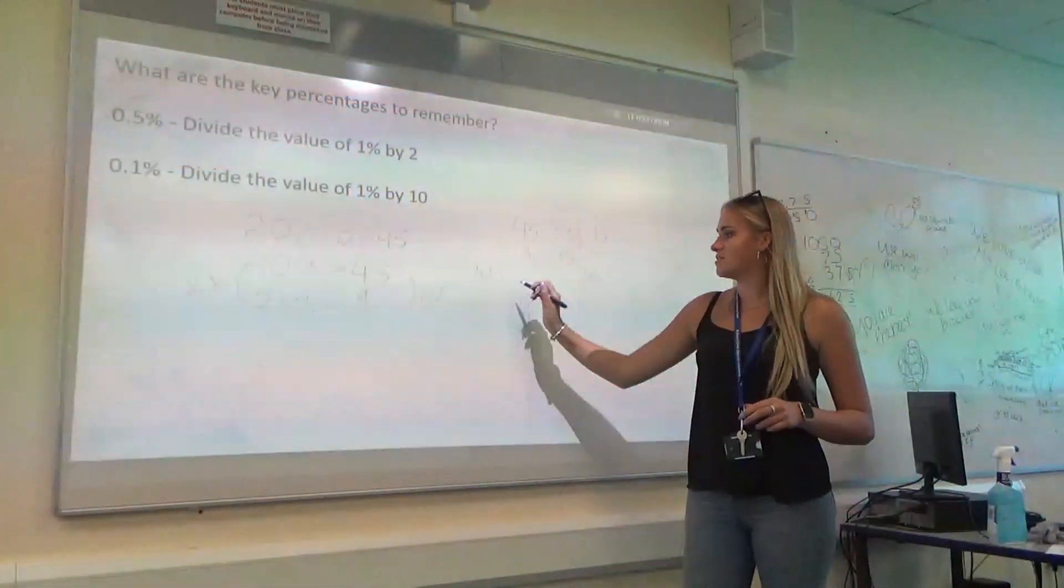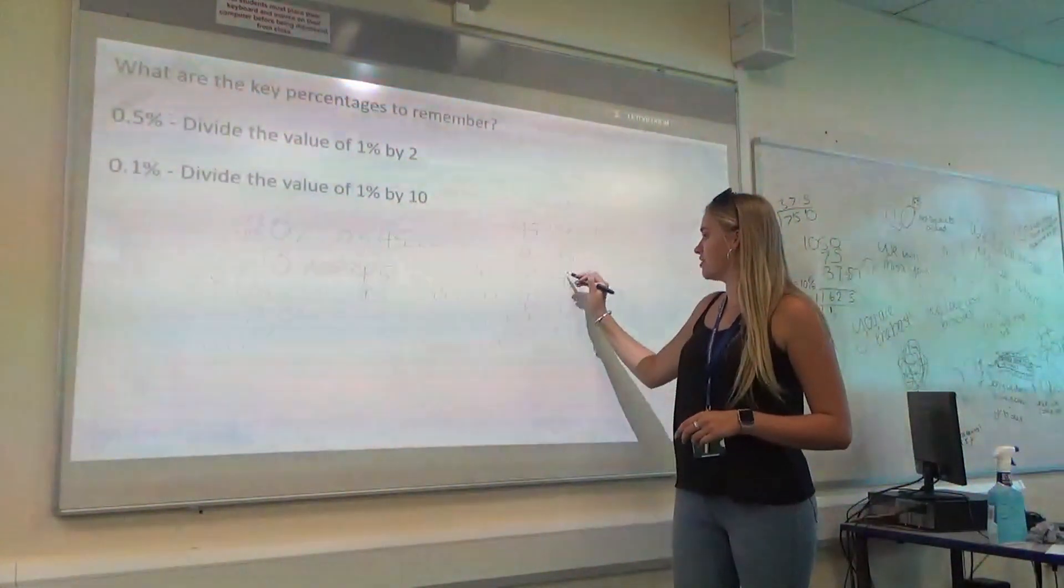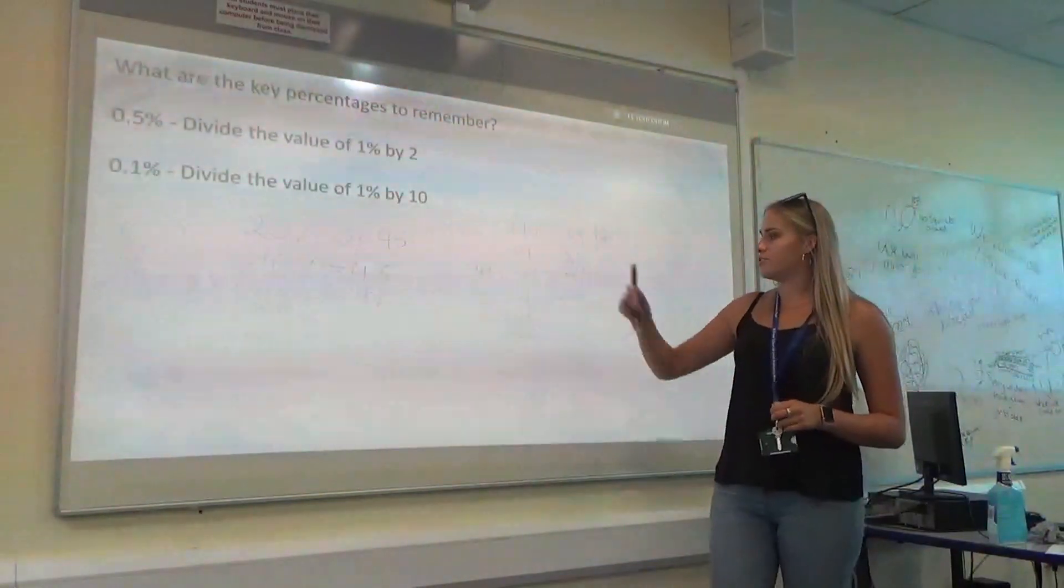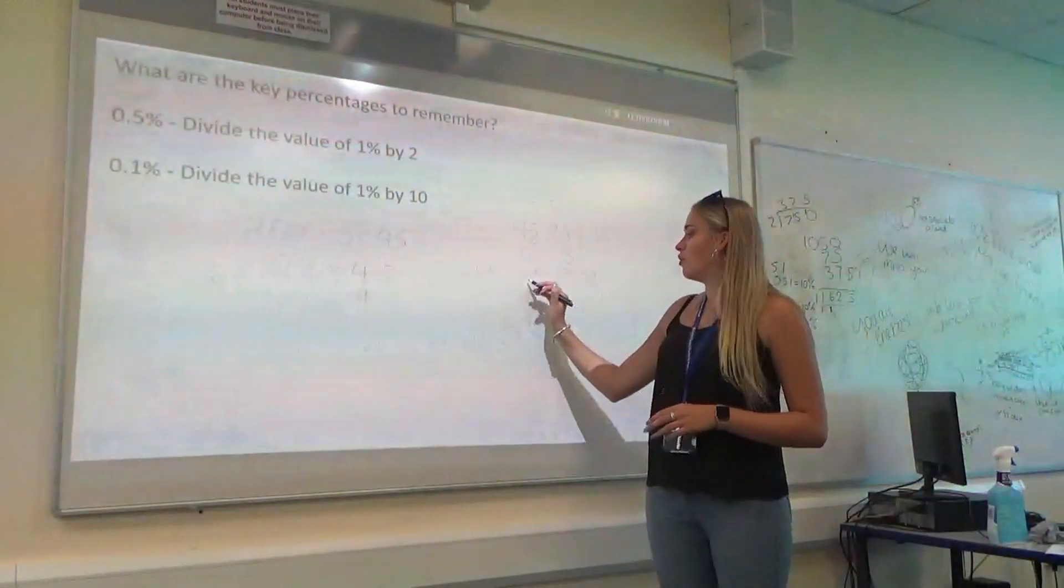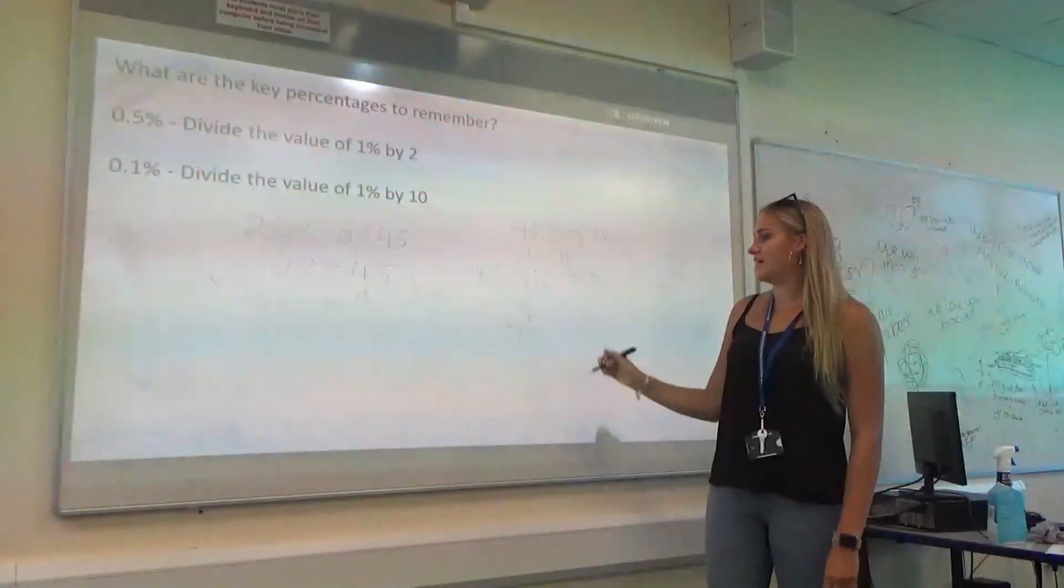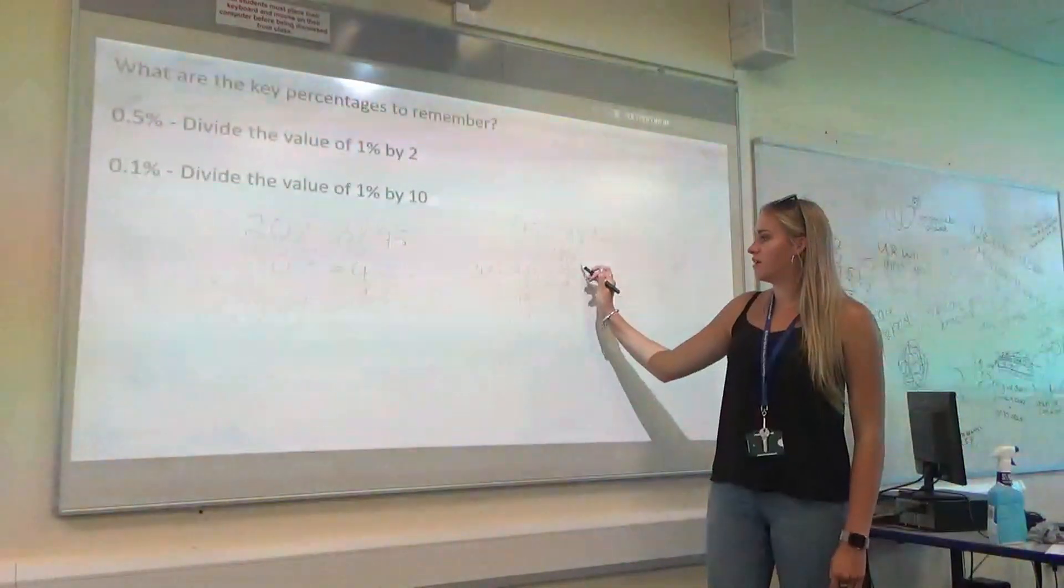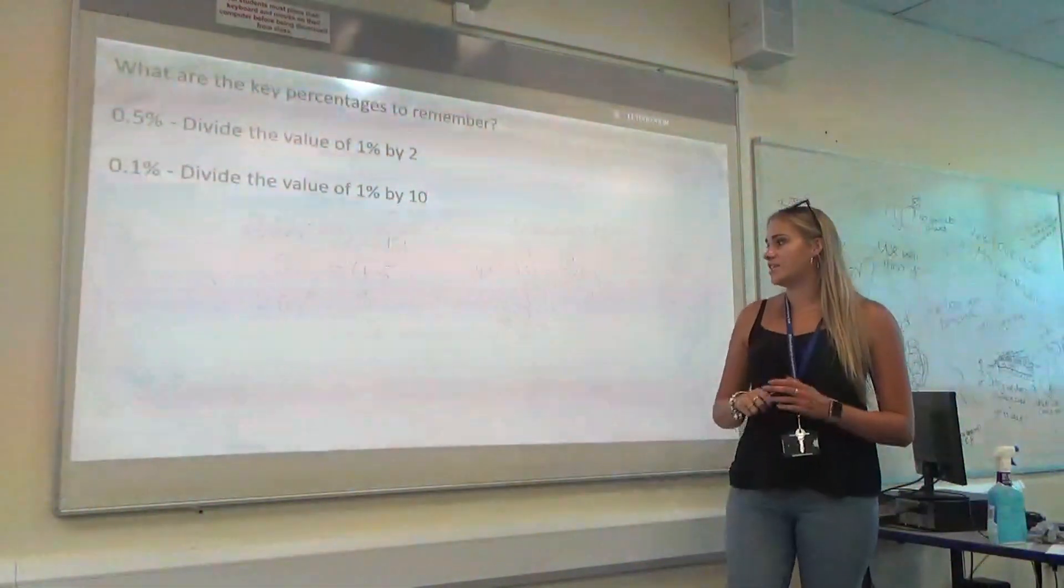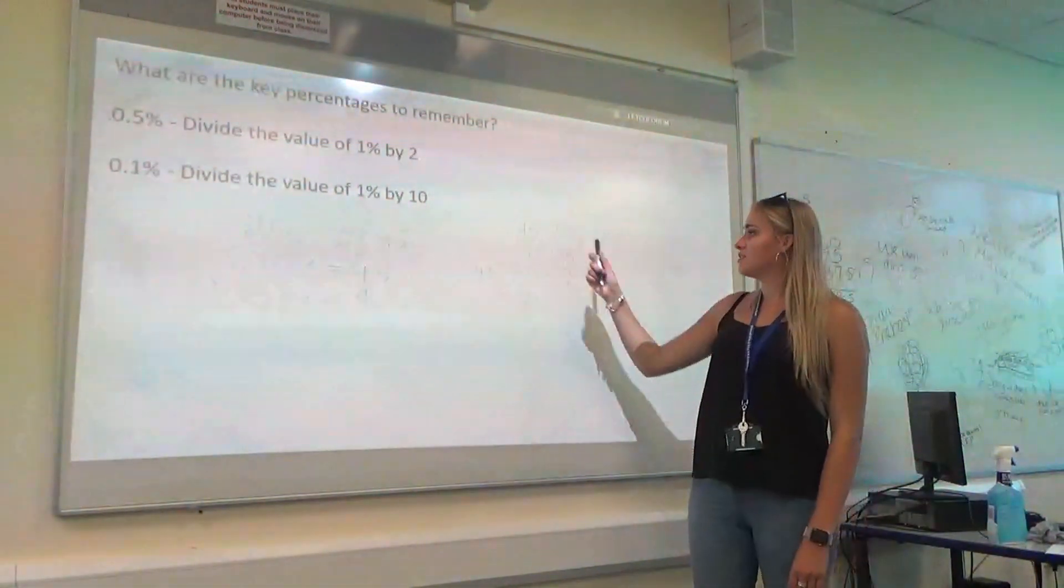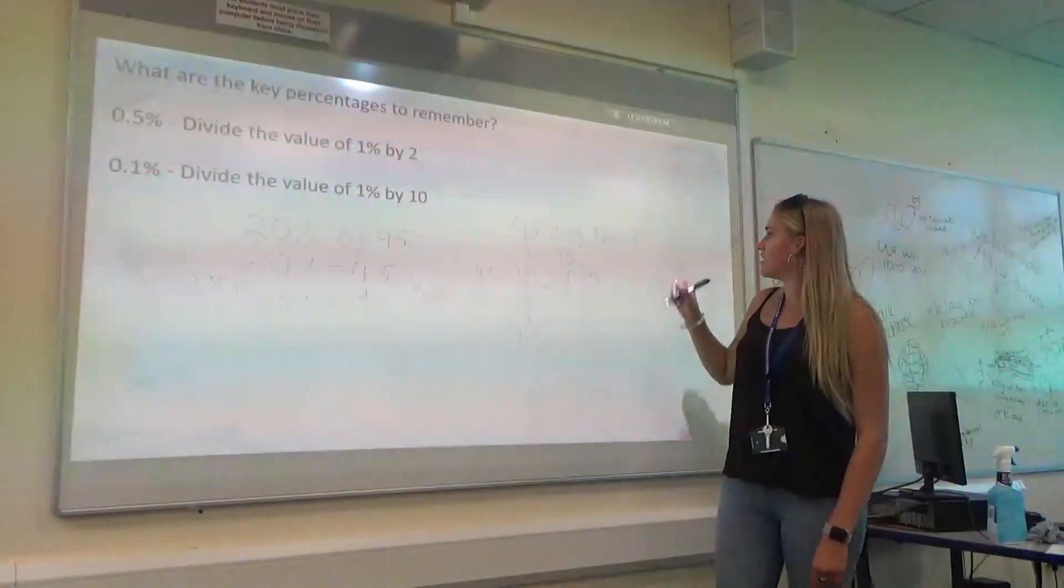Okay? So, we know that 40% is 72. We're nearly there. We just need to get 5% now. We know that 5% is half of 10. So, we can half our 18. And we get 9. To get our 45%, you're going to add your 72 and 9 together. So, we know that 45% of 180 is 81.